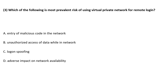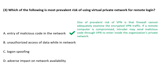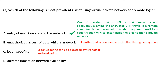Practice question: Which of the following is the most prevalent risk of using VPN for remote access? One of the prevalent risks of VPN is that a firewall cannot adequately examine the encrypted VPN traffic. If a remote computer is compromised, an intruder may send malicious code through VPN to enter the organization's private network. Unauthorized access can be controlled through encryption, logon spoofing can be addressed by two-factor authentication, and VPN does not directly impact the availability of the network.